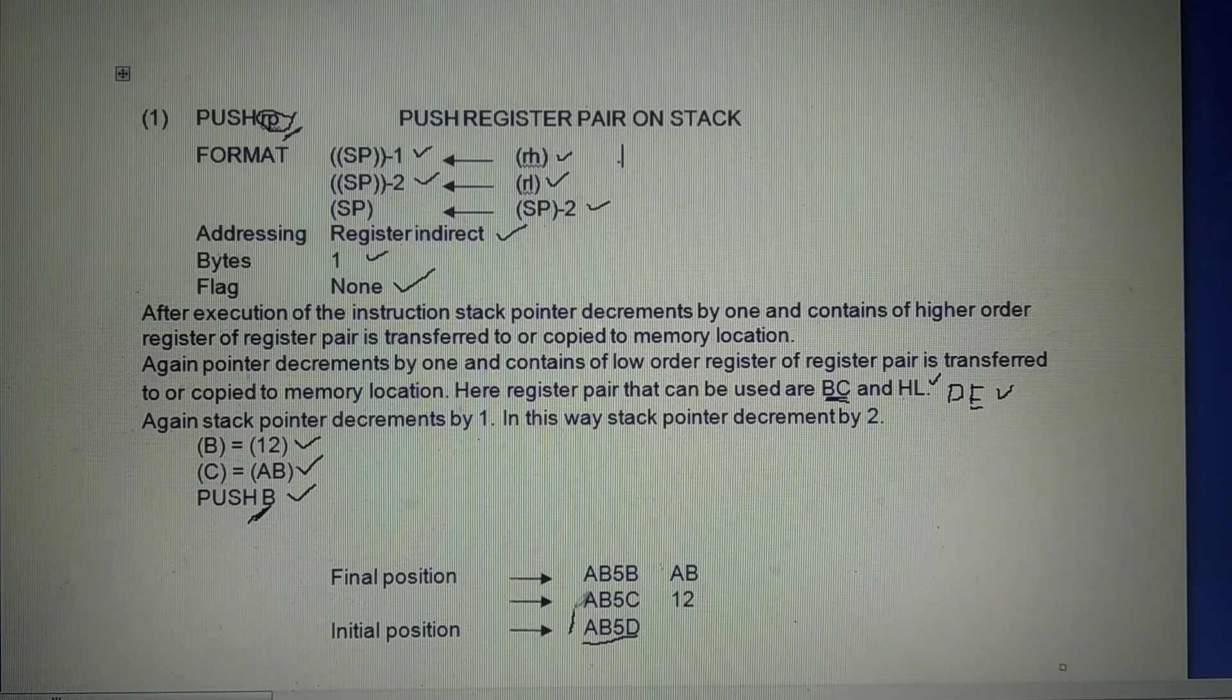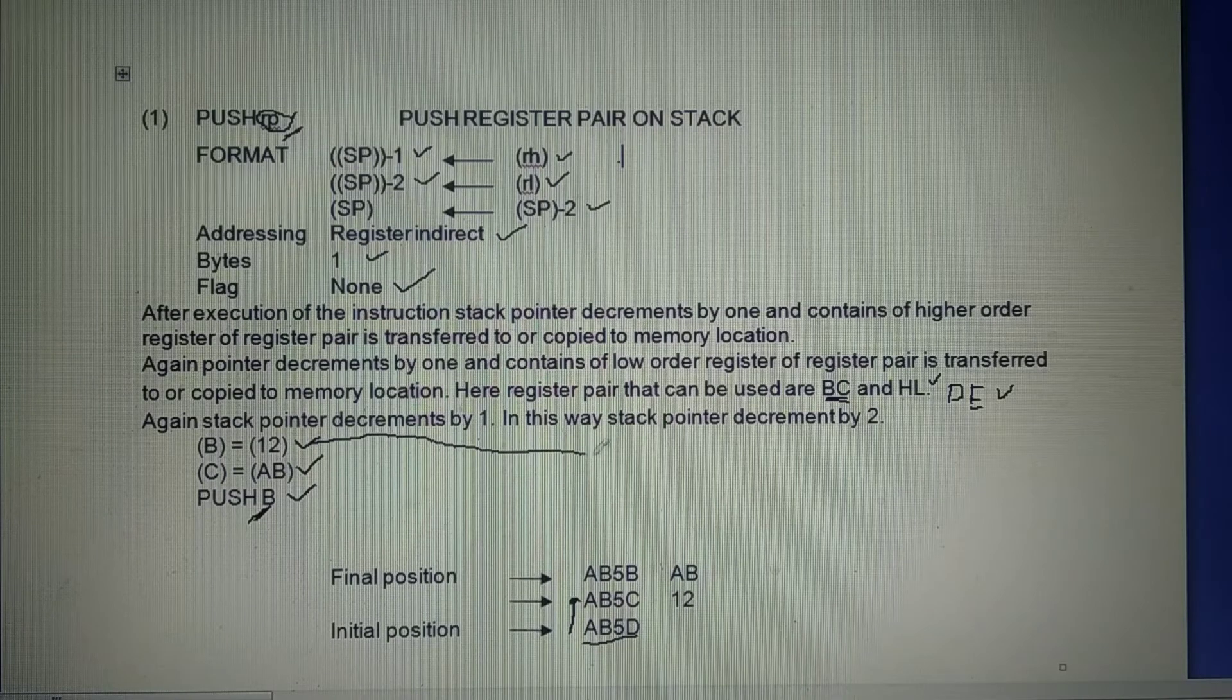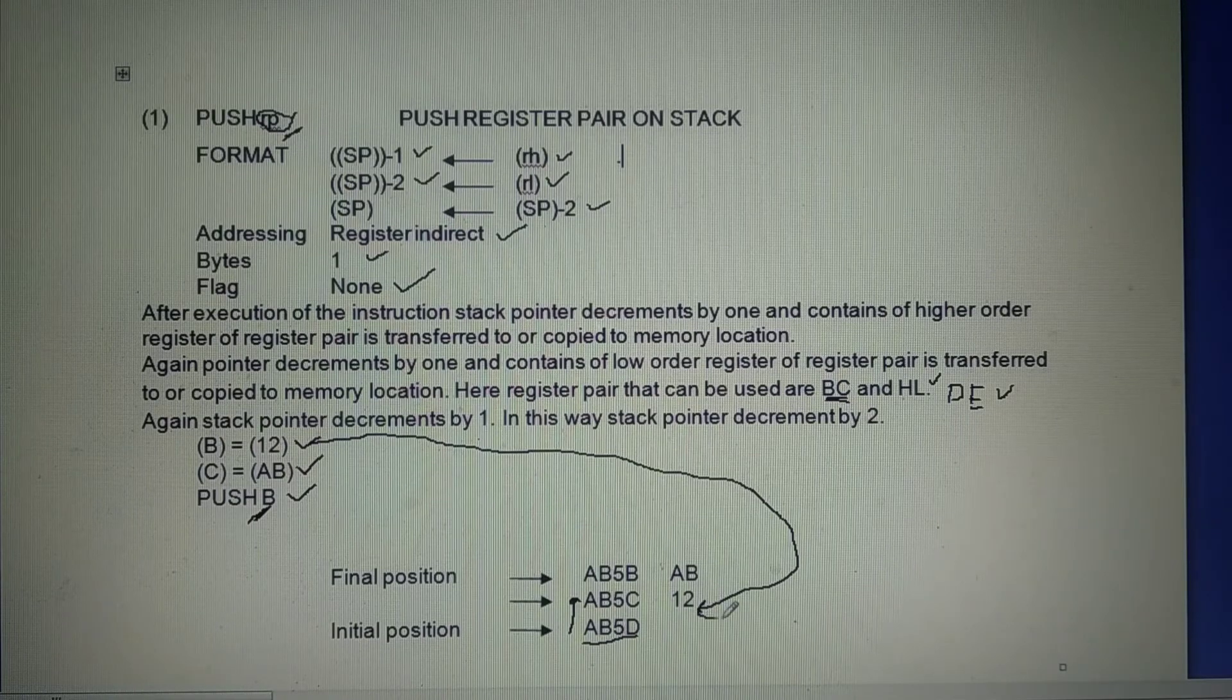It becomes AB5C and content of high-order register of register pair, that is 12, is stored in that memory location.